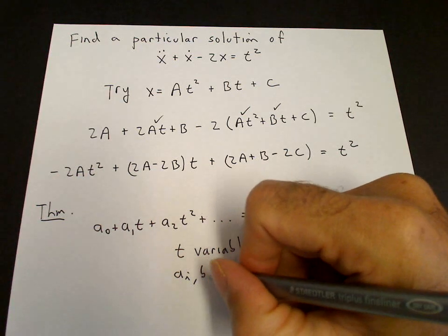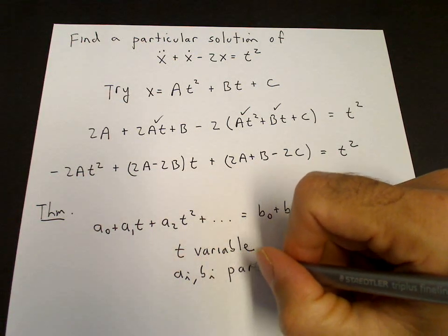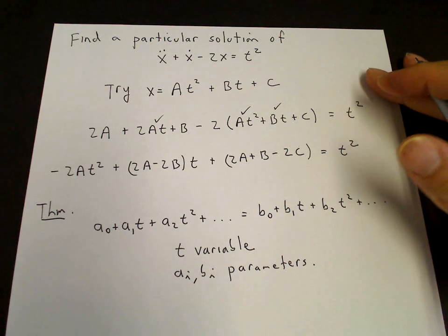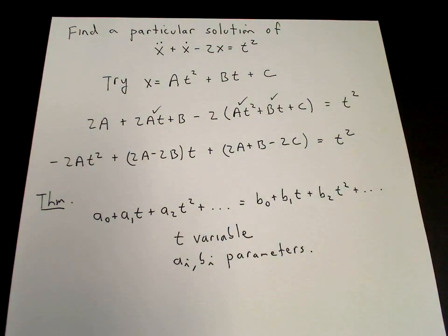The a_i and b_i are parameters. Then by substituting in t equals zero, we see immediately that a0 equals b0.